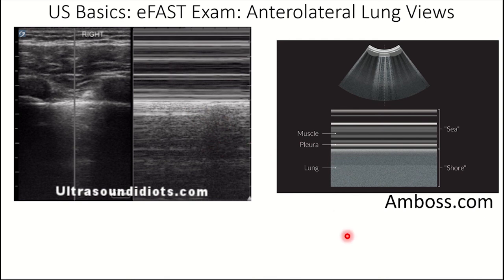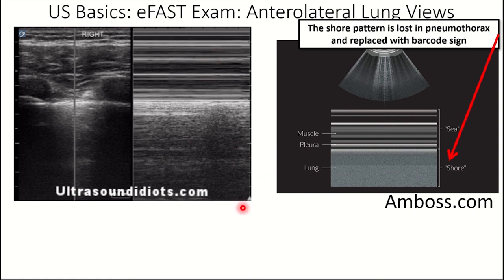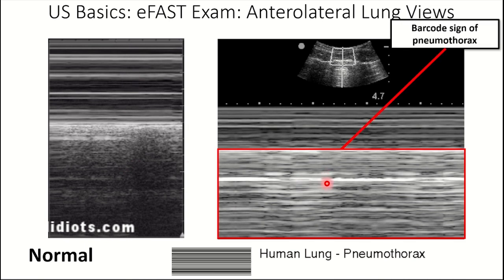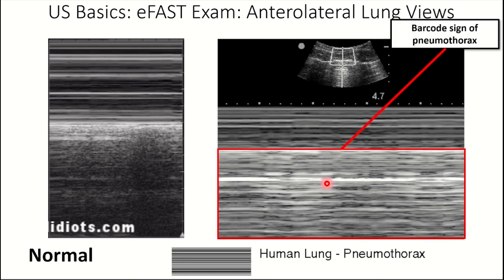In M mode, the normal appearance shows parallel lines representing non-moving structures like skin and parietal pleura, and then the grainy sandy shore appearance of the lung parenchyma — here are the waves and here is the sandy grainy beach. In pneumothorax, you lose that shore pattern and instead get the barcode sign — just straight horizontal lines throughout. That is the barcode sign of pneumothorax when you put your ultrasound probe in M mode.